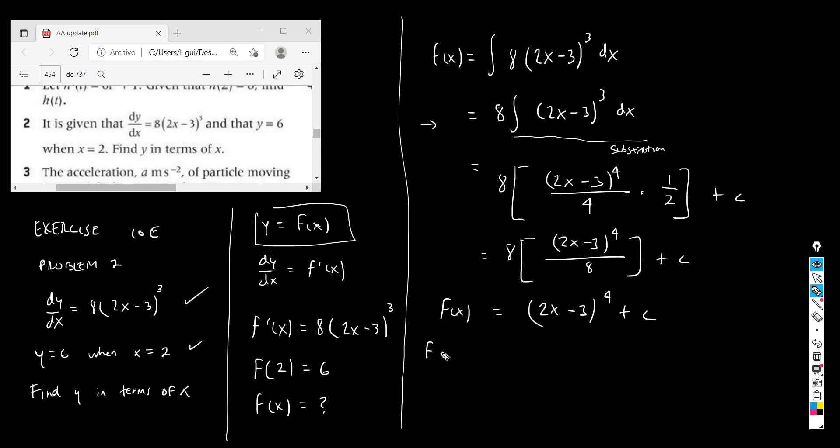I evaluate the function at 2, which is nothing but this, and I make it equal to 6. So you have 4 minus 3 equals 1, 1 to the 4, plus c equals 6.